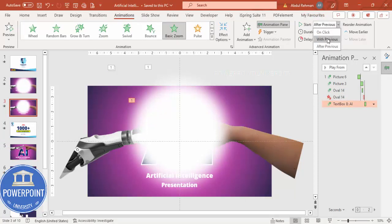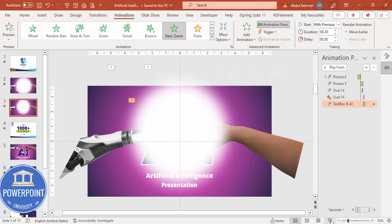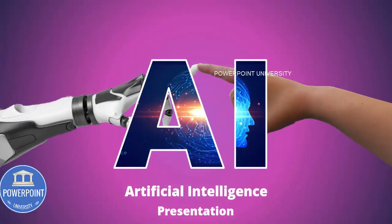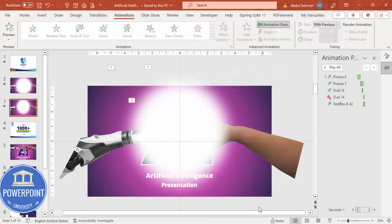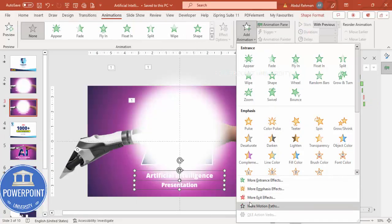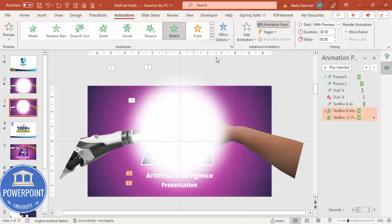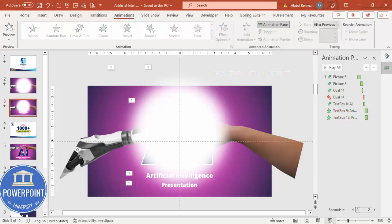There is a delay here — I'm going to make it With Previous and maybe a 0.5 seconds delay. Let's see now — yes, this is okay I believe. Then for these two subtitle texts, select both, Add Animation > More Intense Effects > Stretch — click OK — coming from top, After Previous.